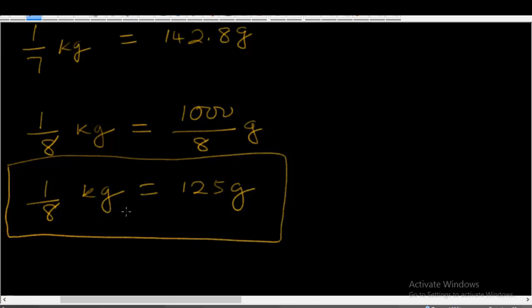Now, the next issue we're going to talk about is measurement of liquid substances. Some liquid soap chemicals and even other production chemicals are in liquid form. You should be able to measure their quantities in liquid form. Liquid substances are measured in centimeter cube, milliliters, cubic liters, and liters. Sometimes these units can be very confusing as many people find it very difficult to understand.